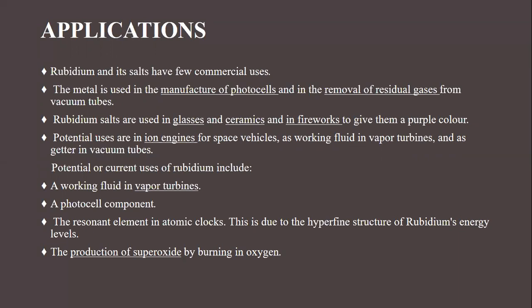Rubidium and its salts have commercial uses. The material is used in the manufacture of photocells, removal of residual gases, and is used in glasses, ceramics, and fireworks. It is also used in ion engines and as a getter in vacuum tubes. It is also used as a working fluid in vapor turbines, as a photocell component, and for the production of superoxides by burning in oxygen.